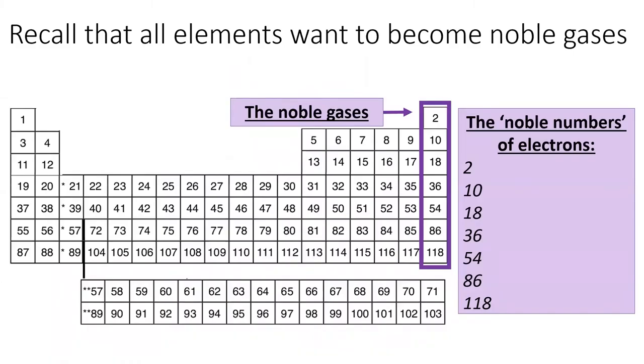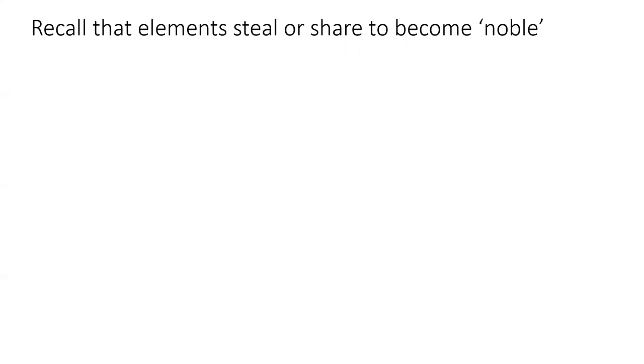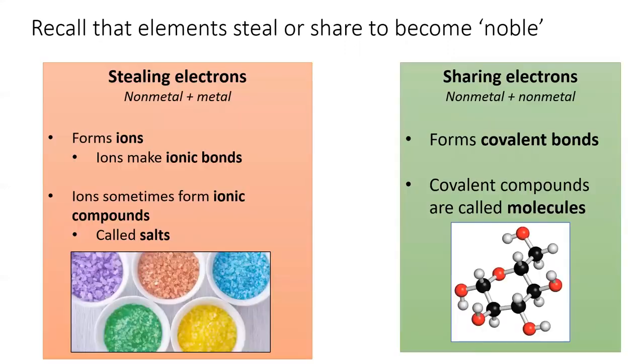Recall from previous lessons that all the elements on the table want a noble number of electrons. There are two ways for elements to get a noble number of electrons: stealing and sharing.